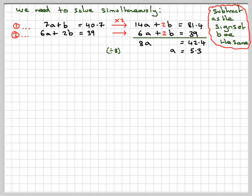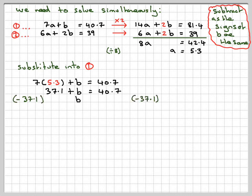Substitute into equation 1: 7 times 5.3 plus B equals 40.7. That's 37.1 plus B equals 40.7. Subtracting 37.1 from both sides gives B = 3.6.